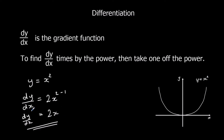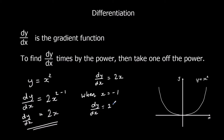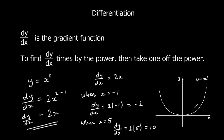We can find the gradient at any point along the curve y equals x squared using the gradient function dy/dx equals 2x. If we wanted to know the gradient when x is negative 1, we substitute in: dy/dx is 2 times negative 1, which is negative 2. When x is 5, the gradient function dy/dx is 2 times 5, which is 10. So dy/dx is the gradient function; to find it, times by the power then take one off the power.